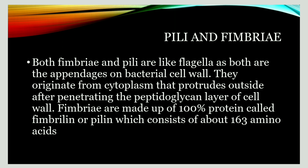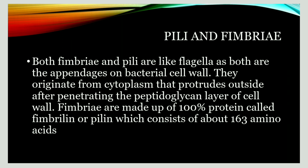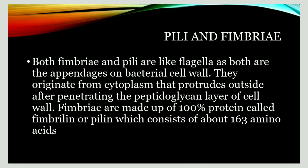In this video we will discuss Pili and Fimbriae. Both Pili and Fimbriae are surface appendages found on a bacterial cell wall. They originated at the cytoplasm, penetrated through the peptidoglycan layer, and finally protruded outside the wall.